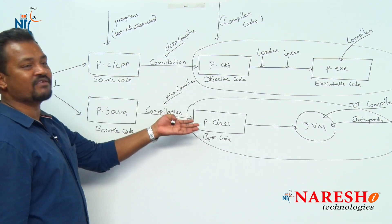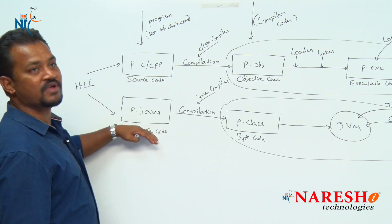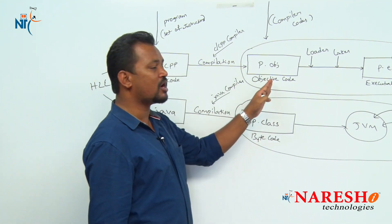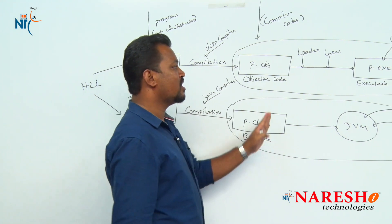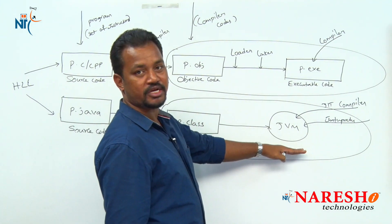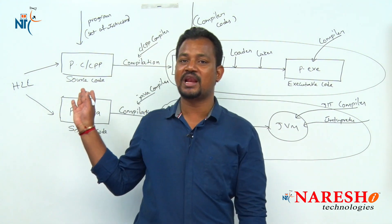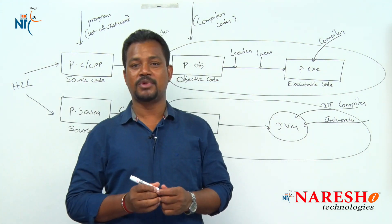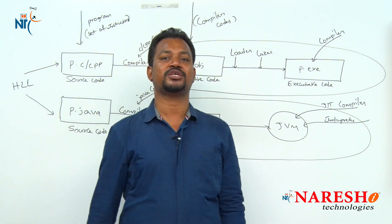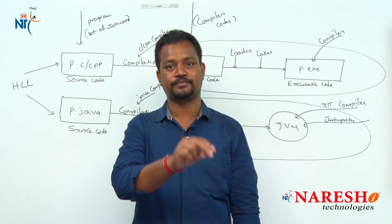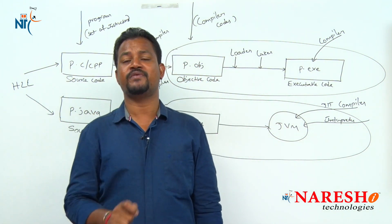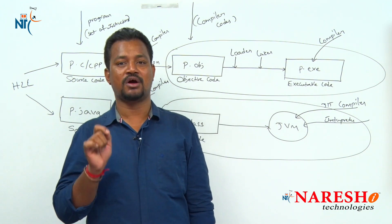Whenever Java uses two translators in the execution process, that automatically results in high performance. Java is high-performance. To summarize: Java is platform-independent because bytecode can be executed on all platforms; Java is portable because bytecode can travel across all platforms; Java is high-performance because it uses two translators in the execution process. This is the basic difference between C, C++, and Java languages.